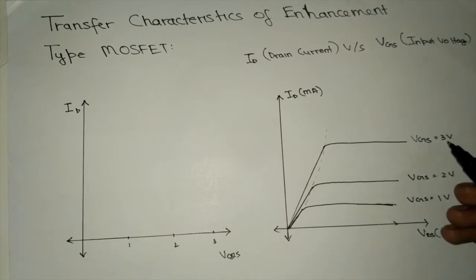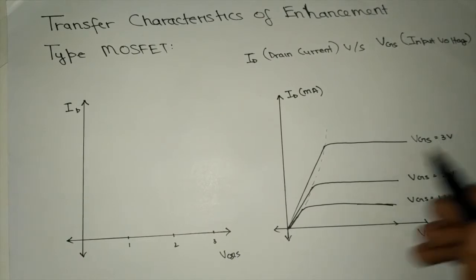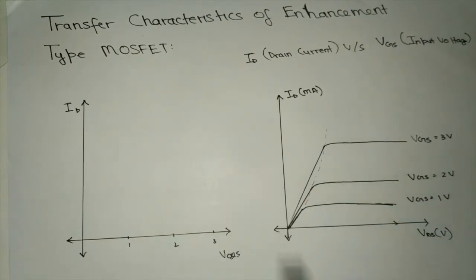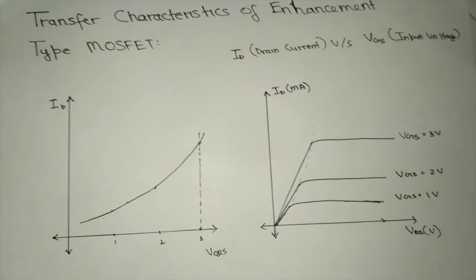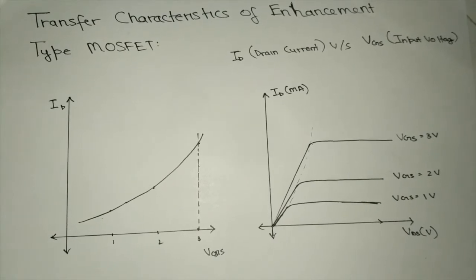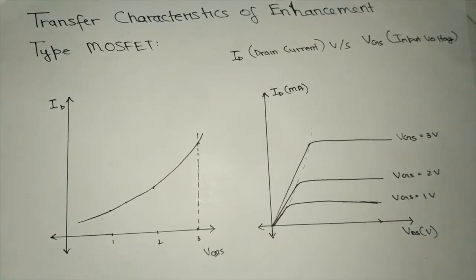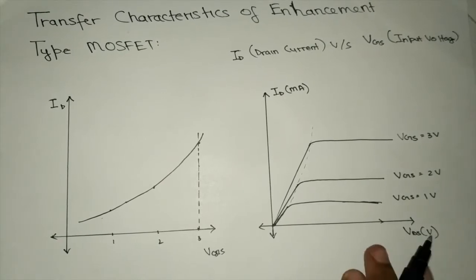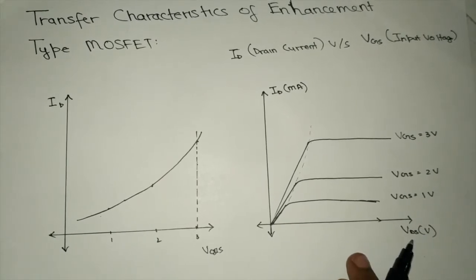As we see here, the VGS value is 3V and ID is this line, so we plot it accordingly. This plot of ID versus VGS that is plotted with the help of the drain characteristics is called the transfer characteristics of the enhancement type MOSFET.